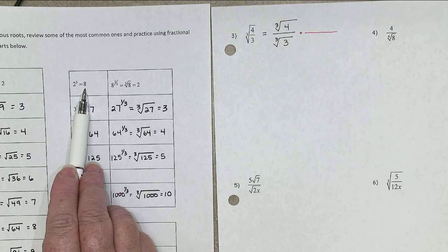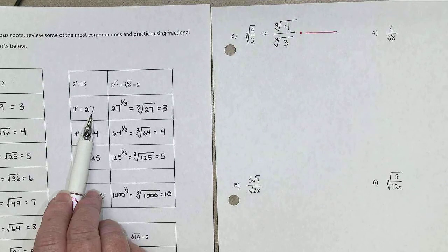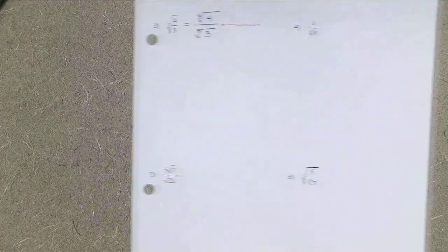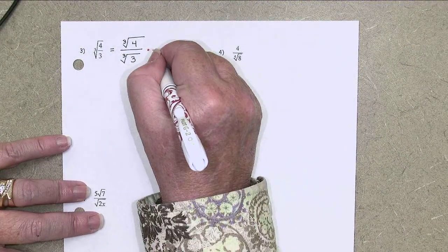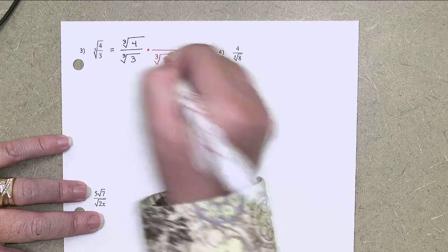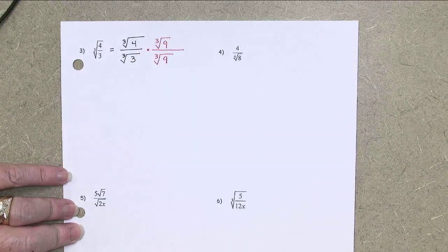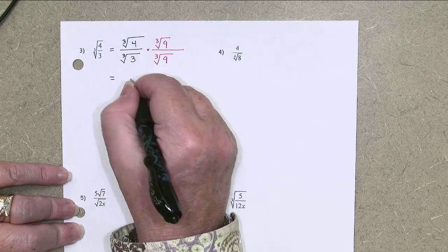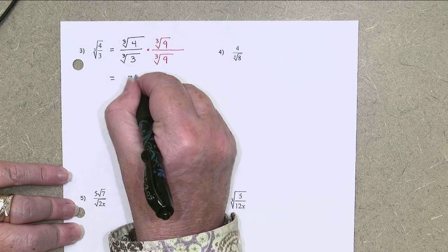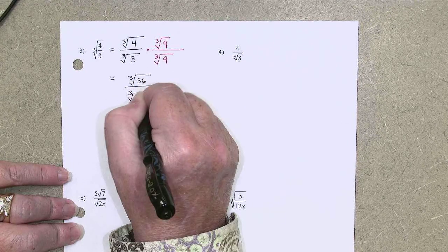Well, I can't turn the 3 into an 8, but I could turn it into a 27 if I multiplied by 9. So that's what I'm going to choose to do. Multiply by the cube root of 9. I need to do the same thing on top, form of 1. And so now the top is the cube root of 36, and the bottom is the cube root of 27.